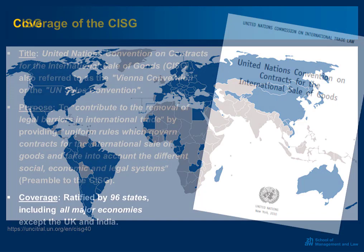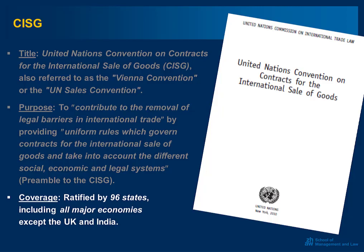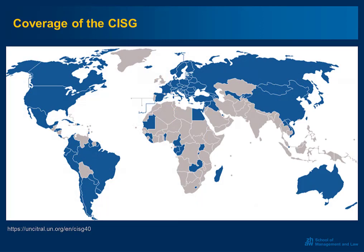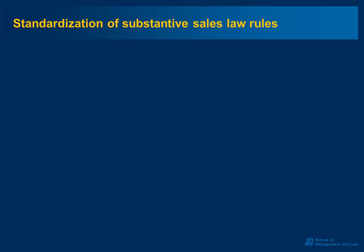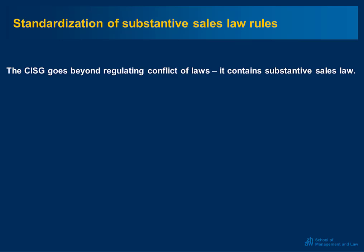So far, the CISG has been ratified by all major economies with some major exceptions, namely the United Kingdom and India. The CISG is about standardizing substantive sales law rules — it goes beyond regulating conflict of laws and contains substantive sales law.